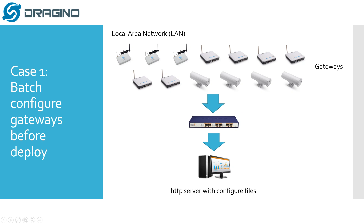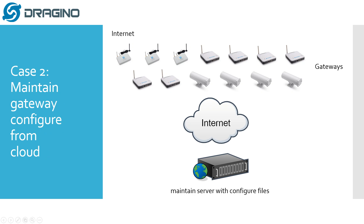The second use case is when you have many gateways on your customer side and you want to maintain the gateway configuration from the cloud or from your maintenance server. For example, if you want to change the network server, the frequency band, or some other settings, you can use this feature to manage the configuration from your cloud.